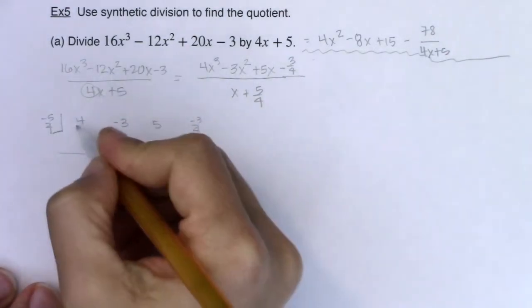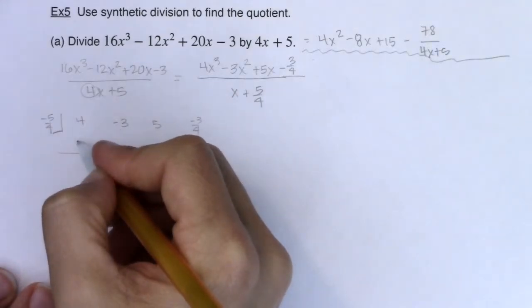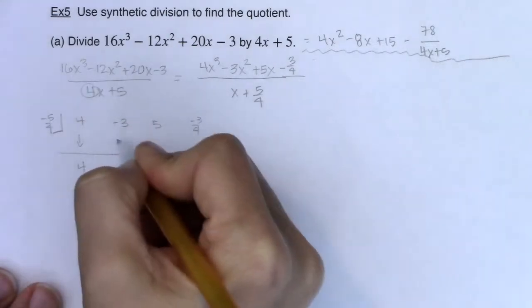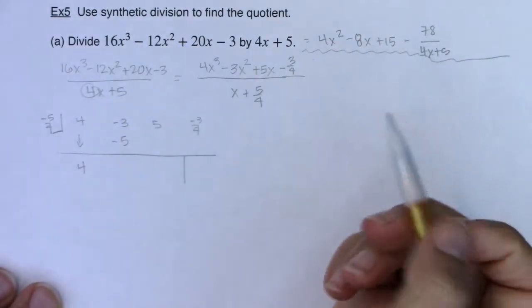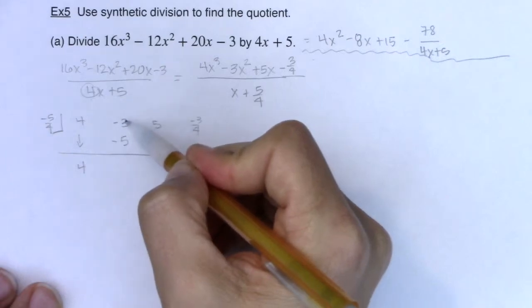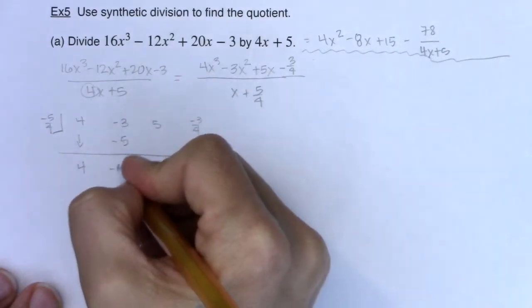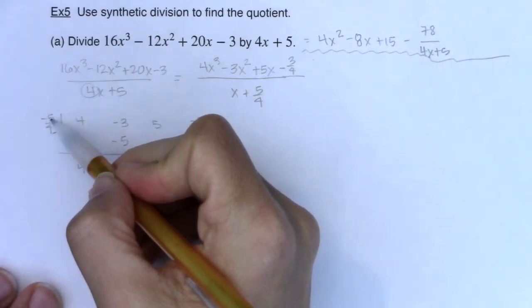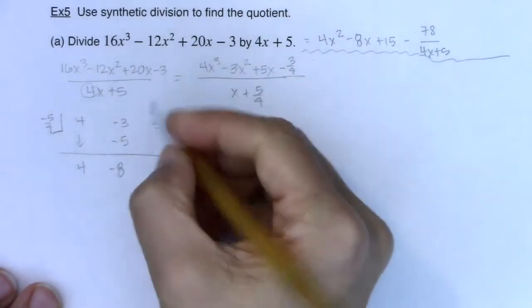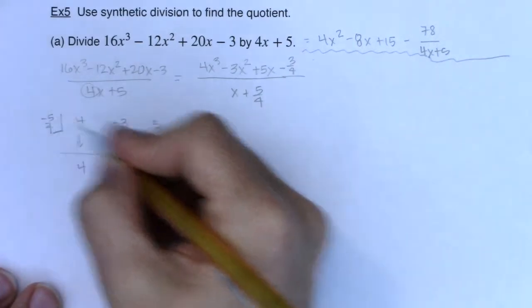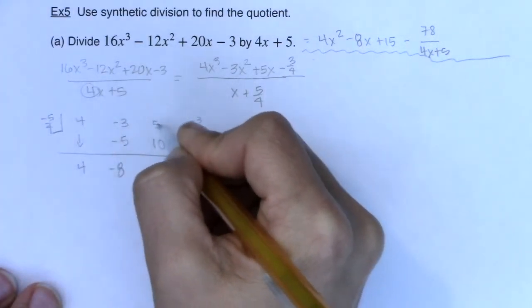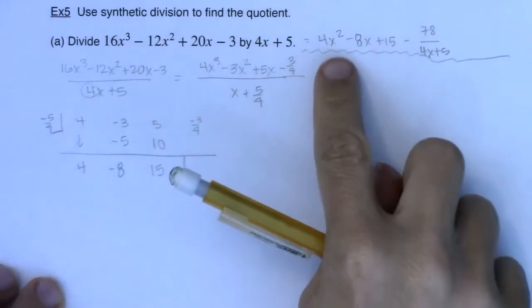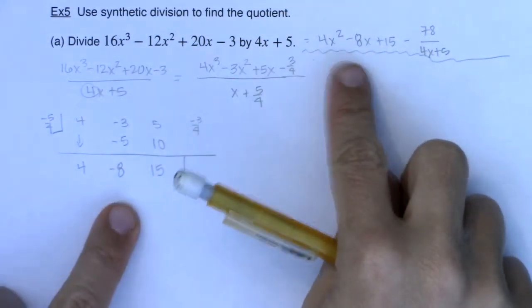All right, so when the 4 comes down, I drop the 4 down. I'll have 4. Negative 5 fourths times 4 is negative 5. Negative 3 plus negative 5 is negative 8. That's also good. All right, negative 5 fourths times 8. If we do that, that would be negative 10. Oh, actually, no, it would be positive 10 because I have a negative times a negative. 5 plus 10 is 15, right? And those coefficients should seem familiar, right? So that's working.